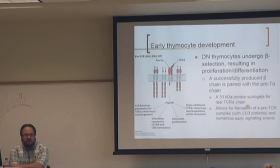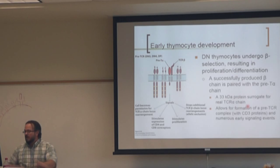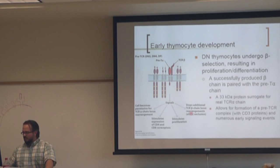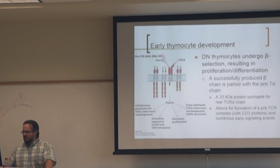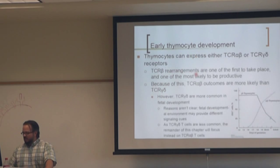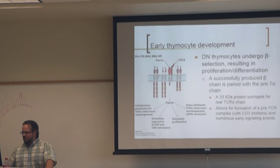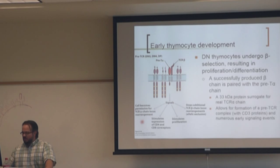Gamma delta T cells also signal through the T cell receptor mechanism — they just have different specificity than alpha beta. The CD3 molecules we're discussing are not the gamma delta TCR chains themselves; those are the CD3 signaling molecules. Here we have an alpha beta T cell receptor, or a pre-T alpha and a beta, as opposed to gamma delta which is a totally different receptor. It will still signal through CD3 if it binds to its cognate antigen or ligand, but it's a different receptor.